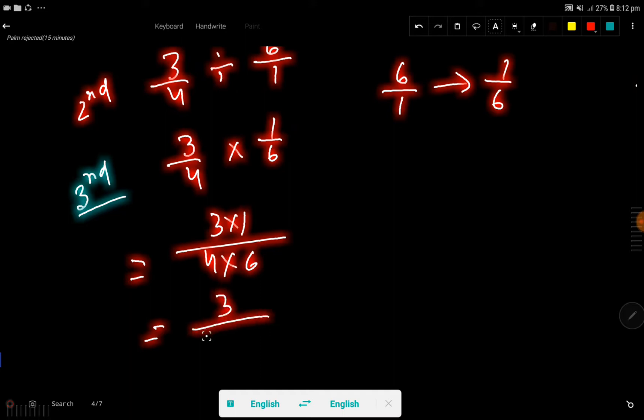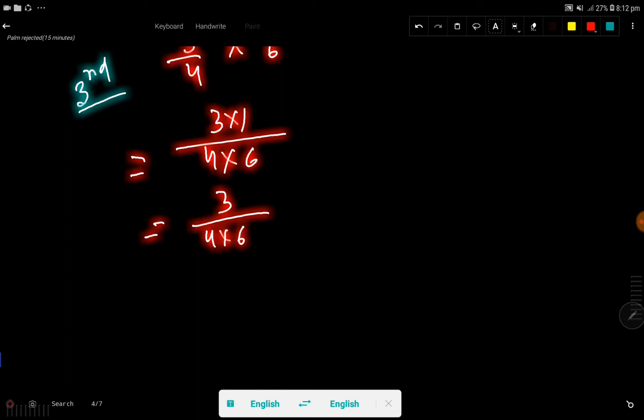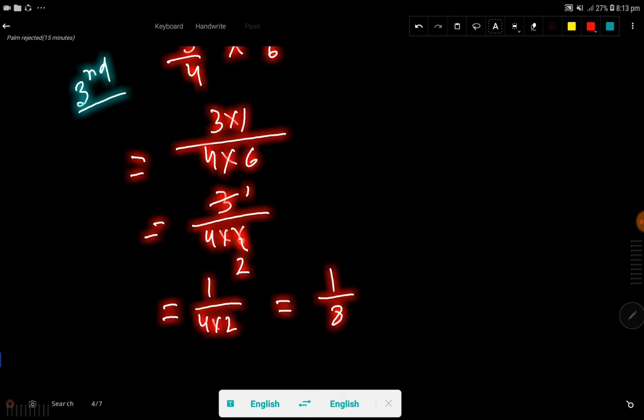So if I reduce, if I divide this numerator by 3, then I am getting 1. And if I divide this 6 by 3, then I'm getting 2. So basically we are getting 1 over 4 times 2, that is 1 by 8. This is the simplest form, so this is the answer.